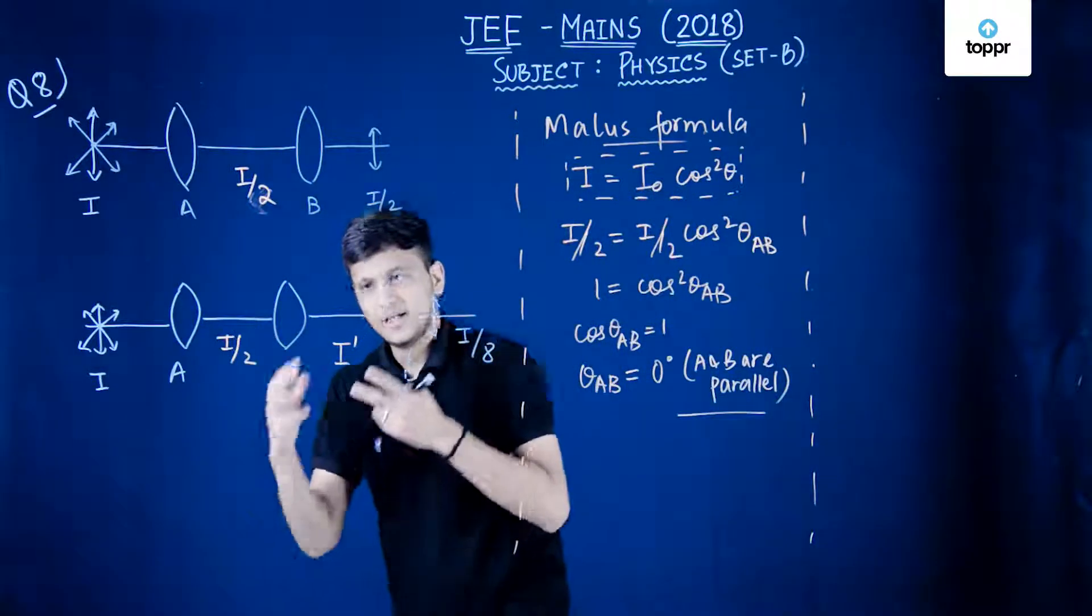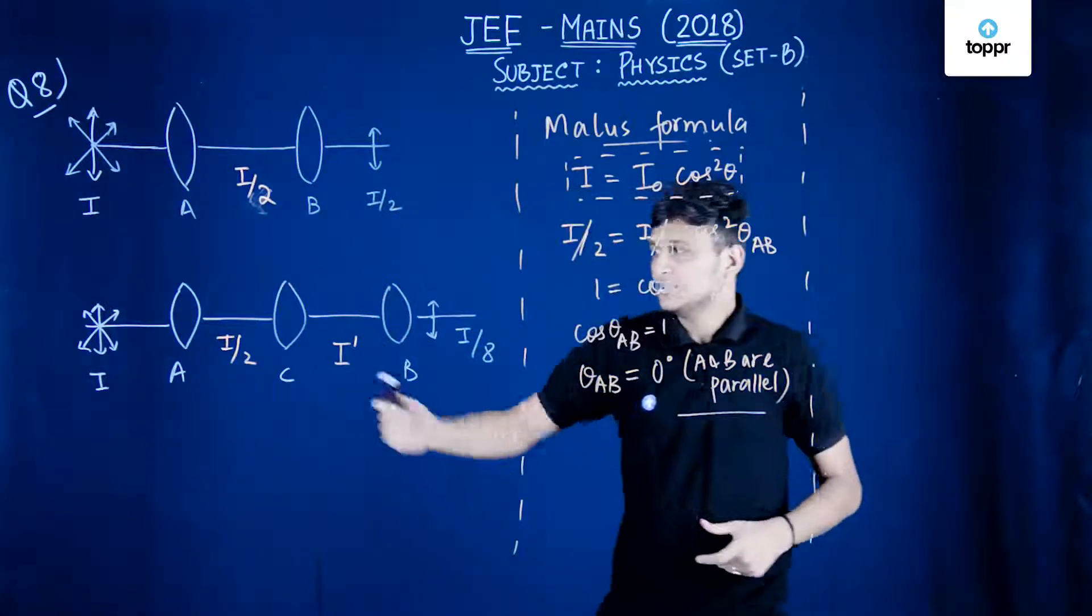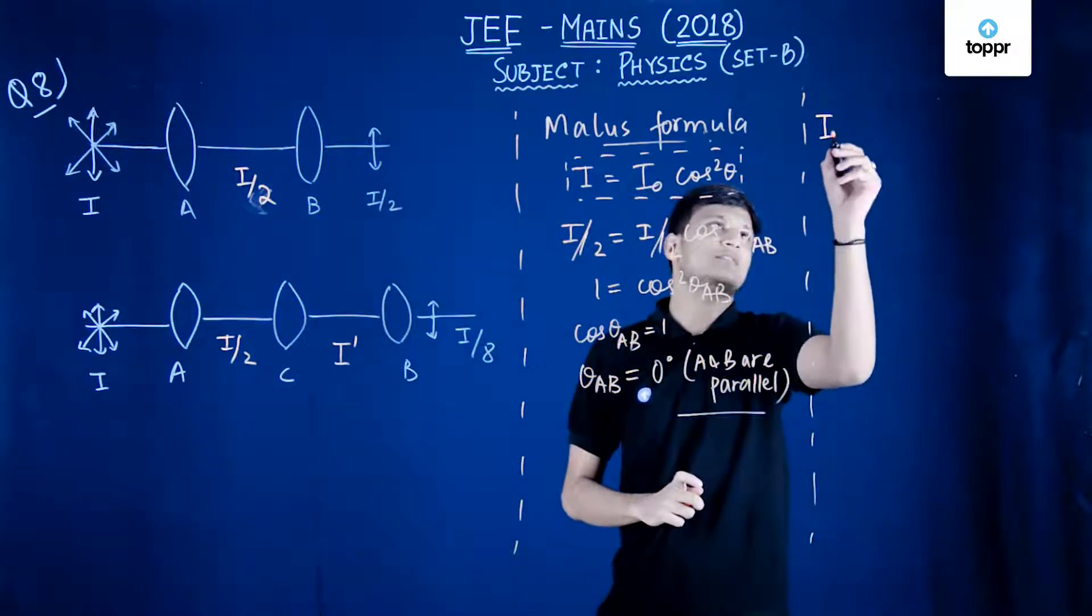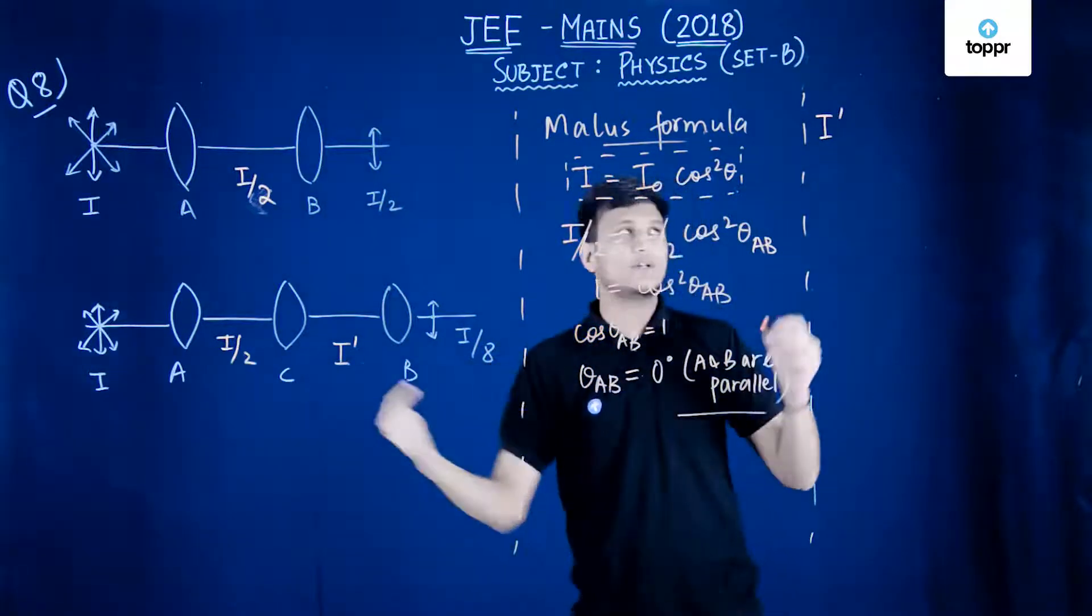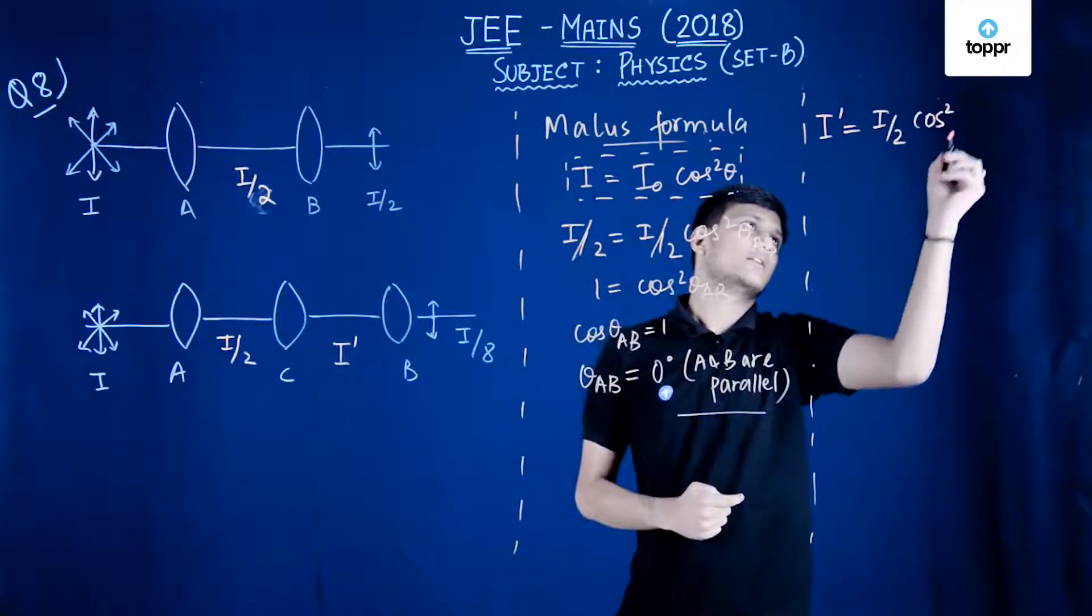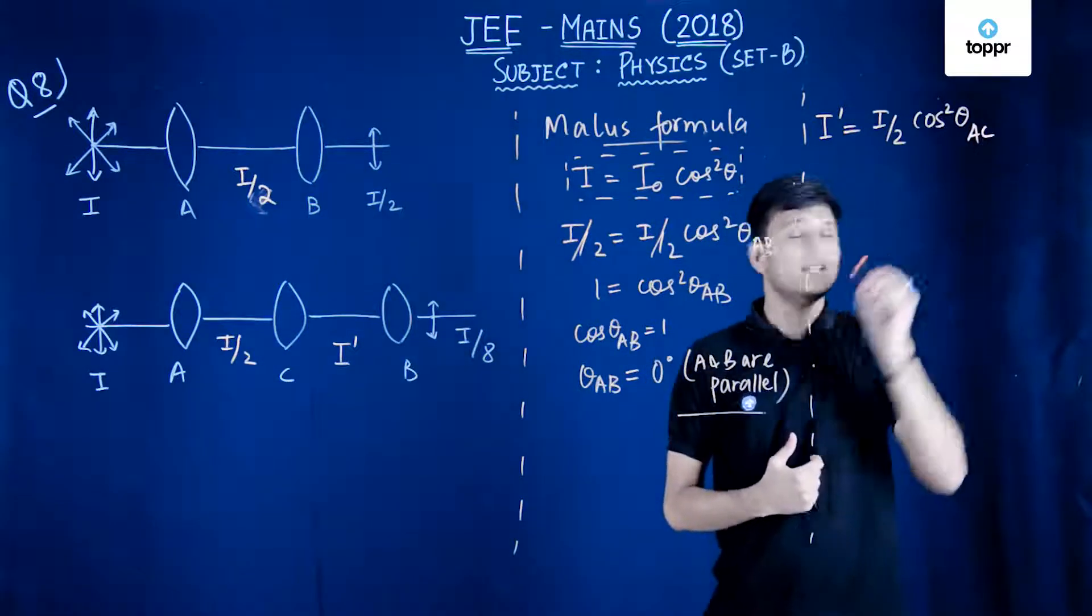First between A and C and then between C and B to get the final intensity I by 8. So let's first apply it between A and C. So it says I prime would be equal to I by 2 cos square theta of AC because it's the angle between A and C.